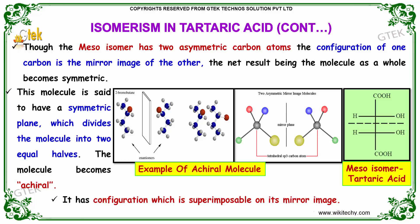Though the meso isomer has two asymmetric carbon atoms, the configuration of one carbon is the mirror image of the other. The net result is that the molecule as a whole becomes symmetric. This molecule is said to have a plane of symmetry which divides the molecule into two halves. The molecule becomes achiral and has a configuration which is superimposable on its mirror image.